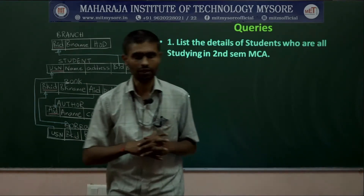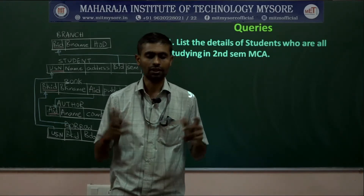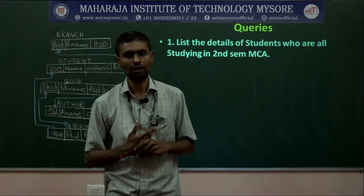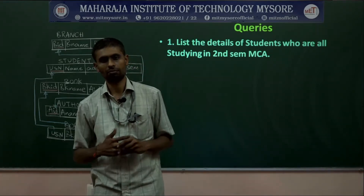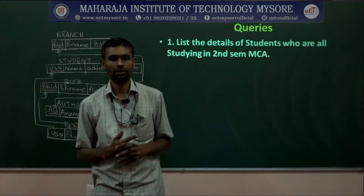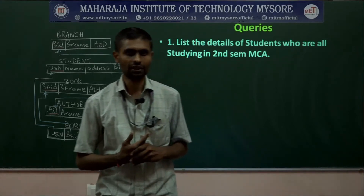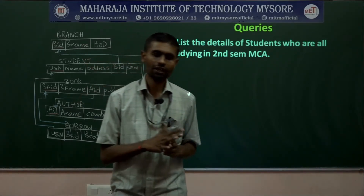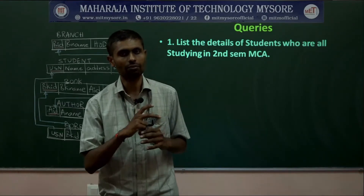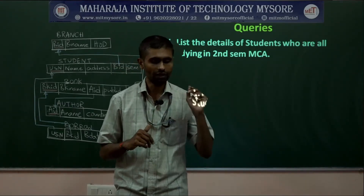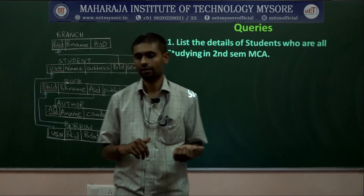Without that joining condition, it becomes tuple multiplication, which we call Cartesian product. A Cartesian product always contains spurious — that is, unwanted and unrelated — tuples. To avoid wrong results, always write a matching condition between tables in the FROM clause.